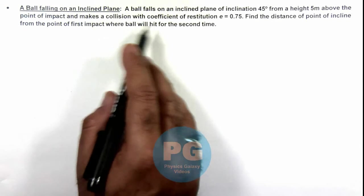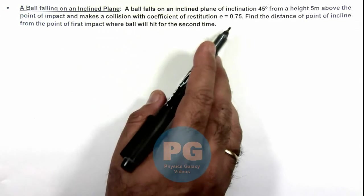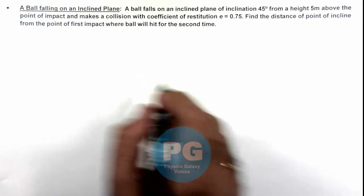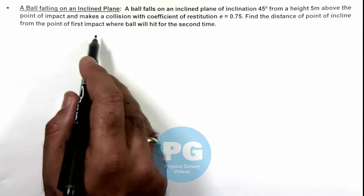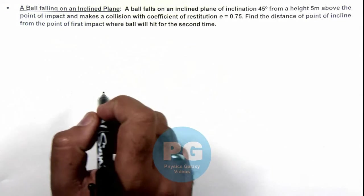The ball makes a collision with coefficient of restitution e = 0.75. We are required to find the distance of point of incline from the point of first impact where the ball will hit for the second time.